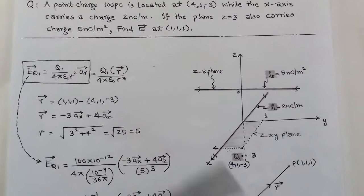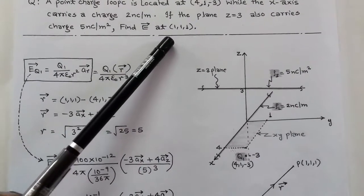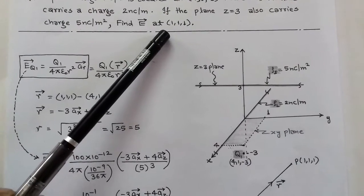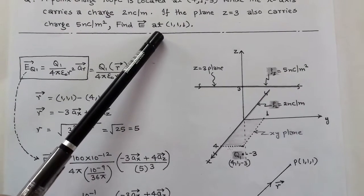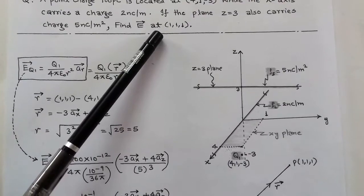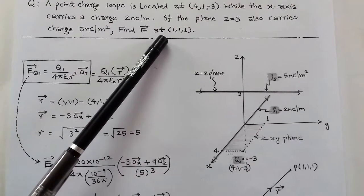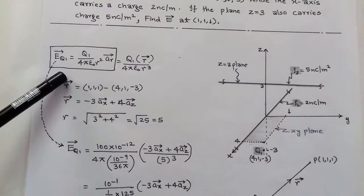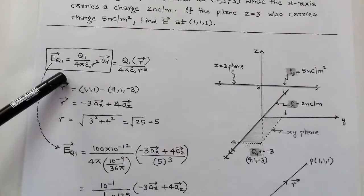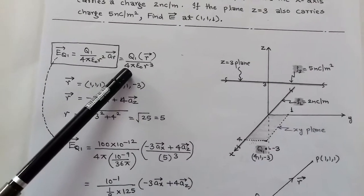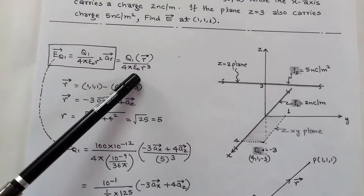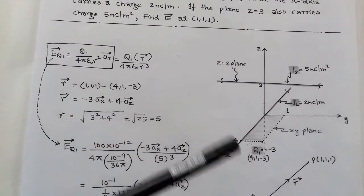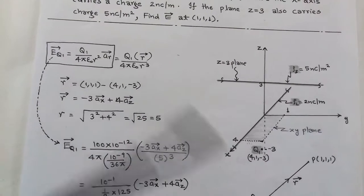Our requirement is to determine the electric field intensity E at point (1, 1, 1). We can determine the electric field for each of the three cases one by one and add them up at the end. The formula for electric field intensity due to point charge Q1 is Q1 upon 4πε₀r² times unit vector r.